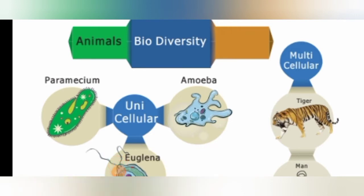In our yesterday's class we classified organisms into unicellular organisms and multicellular organisms. Unicellular organisms are organisms which are made up of a single cell — the entire organism is made up of single cell — and multicellular organisms are organisms which are made up of many cells.